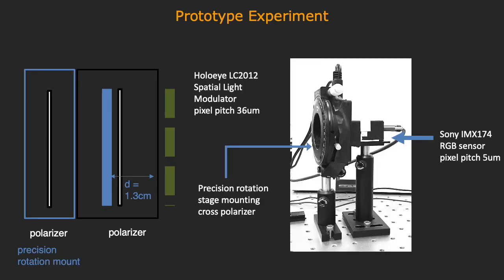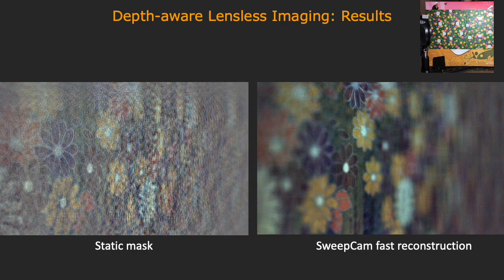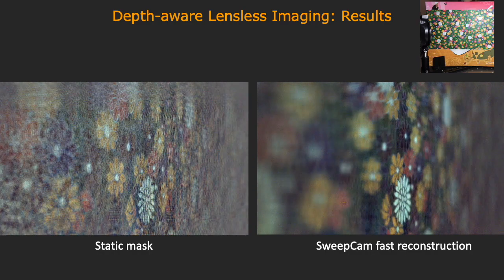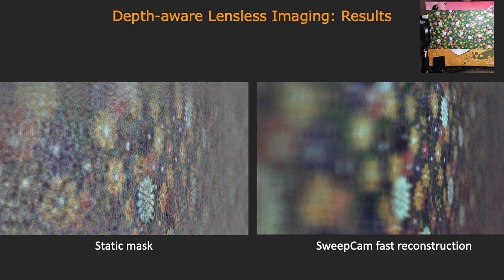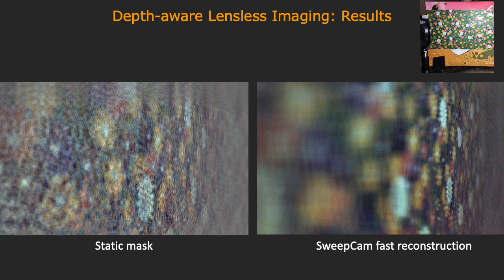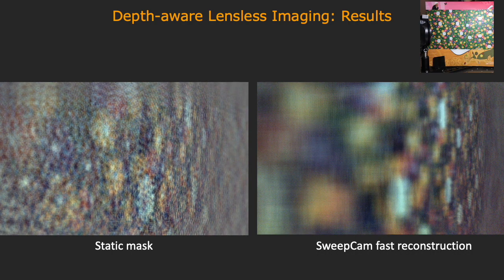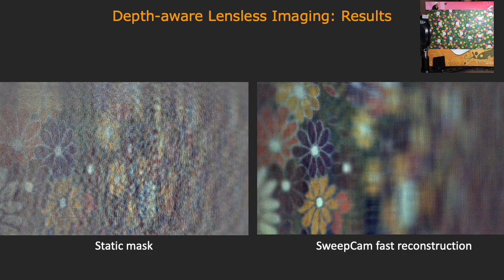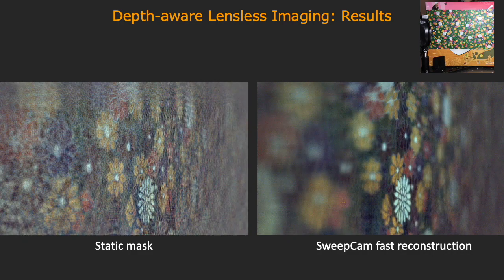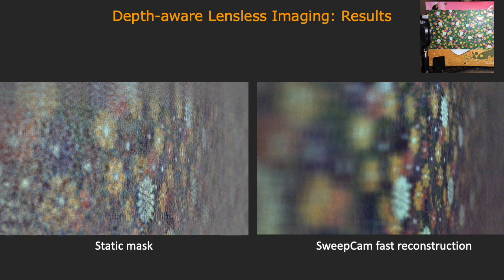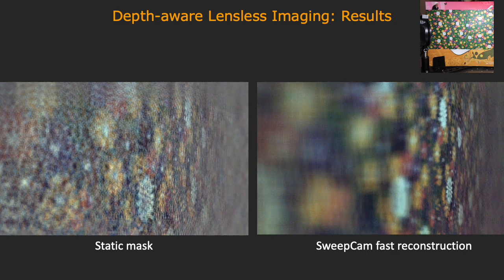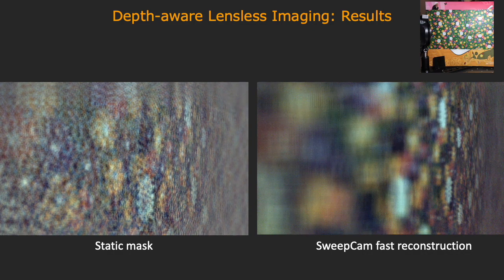We build a prototype to validate our method. Our prototype programmable mask consists of an LCoS display sandwiched between a pair of cross polarizers. Here are results from captured data. A plane with a flower pattern is placed at an angle in front of the imager. The focal stacks shown are obtained by reconstructing for different depths. On the left, we show reconstruction results from 338 measurements with a static mask, and on the right, from the same number of measurements obtained with translated masks. Note the high-frequency artifacts caused by contribution from other depths are removed on the right.